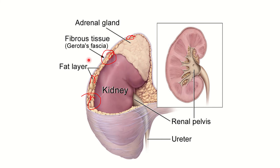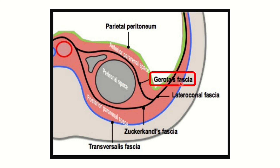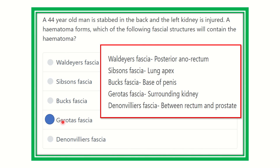Gerota's fascia covers the full kidney. During injury to the kidney, bleeding occurs and is collected between Gerota's fascia and the kidney. As seen in the picture, if any injury occurs to the kidney, blood accumulates in this space within Gerota's fascia. So our final answer is Gerota's fascia.